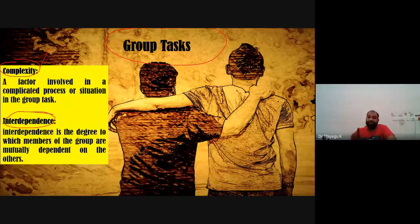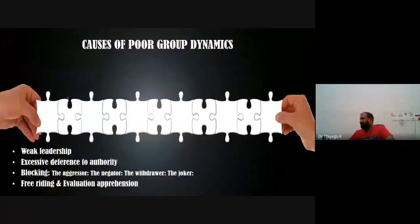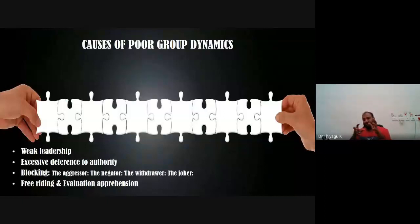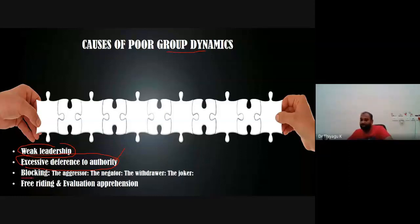We cannot put every problem on the examiner of our department — once we give the question, only then can the examiner organize the examination. Every task depends on each person — if one teacher is not giving the question paper in proper time, we cannot organize the examination. The causes of poor group dynamics include: weak leadership cannot find any group dynamics; excessive difference in authority where high-power people try to control everything; and blocking — some group members always block the process, being aggressive, which prevents the group from moving further.